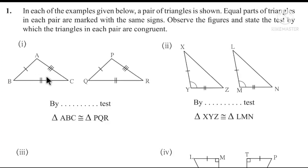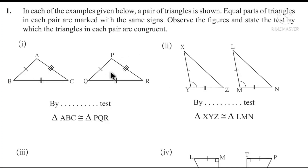According to the markings, we have side marks for both triangles. The test is Side-Side-Side (SSS). For the second pair, we have Side-Angle-Side (SAS) — two sides and the included angle are congruent, so these two triangles are congruent by SAS.